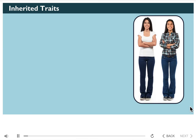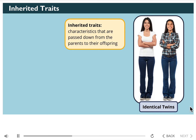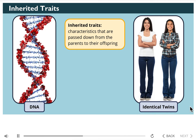Look closely at these girls. What do you notice about them? They're identical twins, which means they have a lot of the same traits. For example, they both have dark hair, dark eye color, and they're the same height. These traits are called inherited traits. The word inherited means to receive from one's parents. Inherited traits are passed down from parents to their offspring. DNA, or deoxyribonucleic acid, is the molecule that all living things use to pass inherited trait information on to their children.